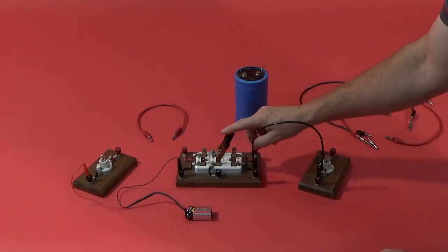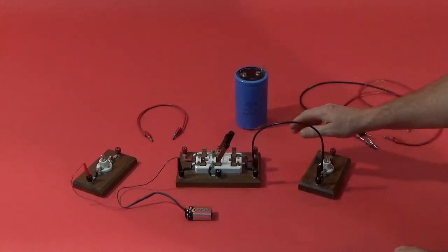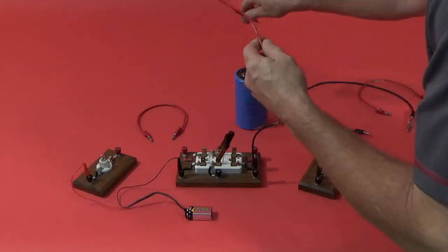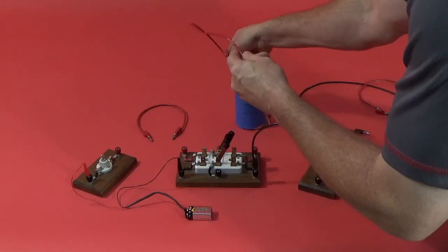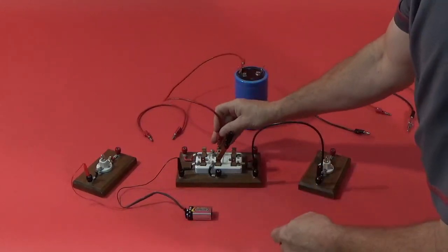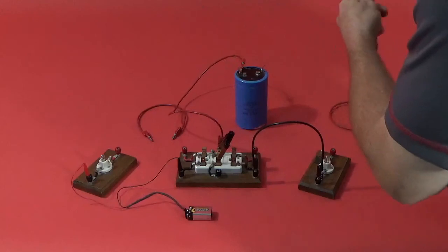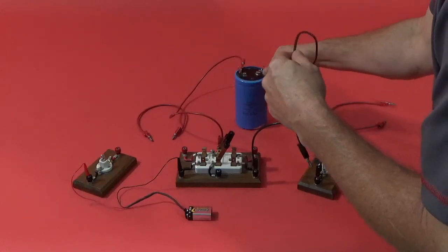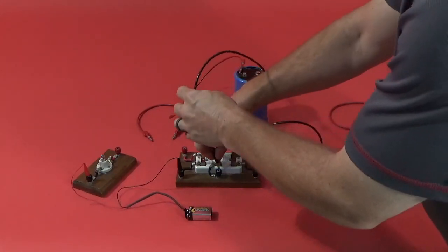When we bring this night switch this way, this half of the circuit is running. The capacitor has a polarity, and this is a positive lead on this side, and we'll put it on that terminal. And this is the negative side of the capacitor, and we'll put it on the other side of the terminal.